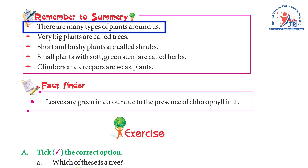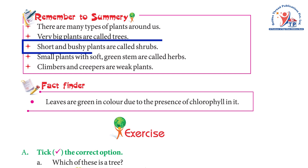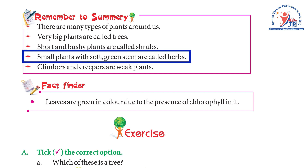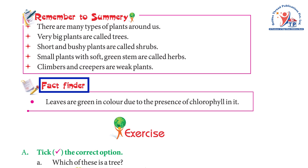Summary: there are many types of plants around us. Very big plants are called trees. Short and bushy plants are called shrubs. Small plants with soft green stems are called herbs. Climbers and creepers are plants with weak stems.